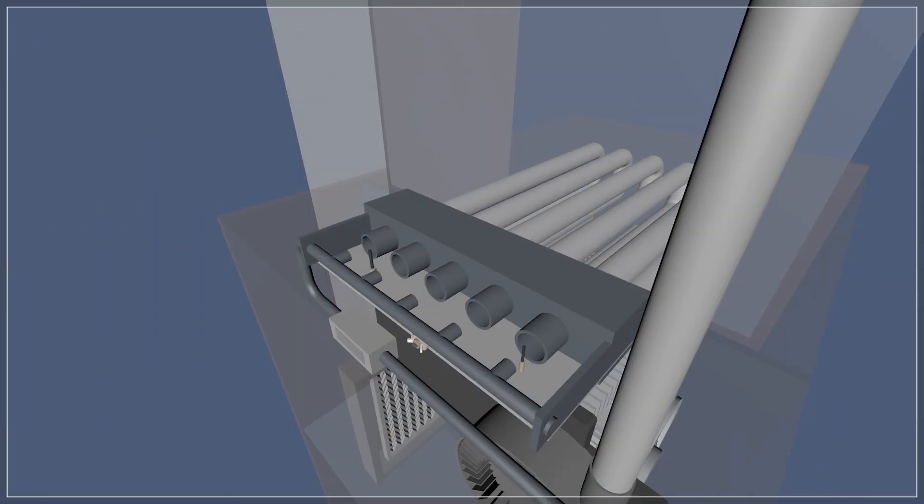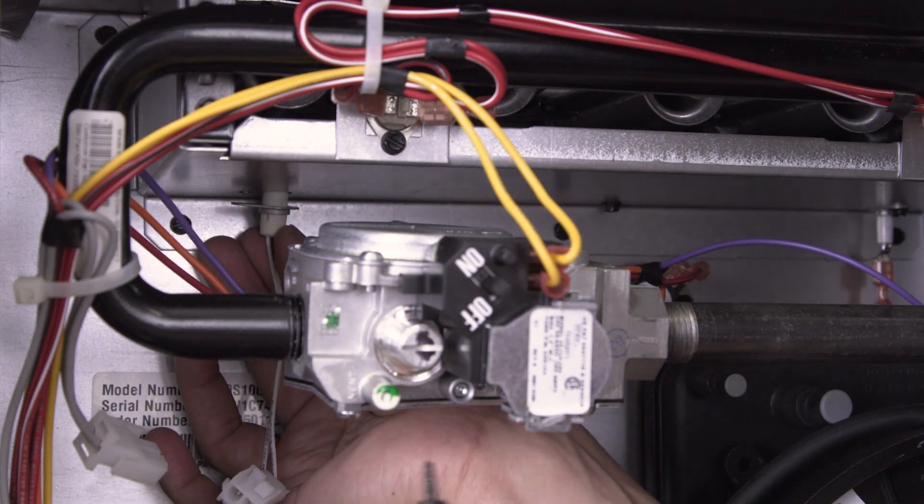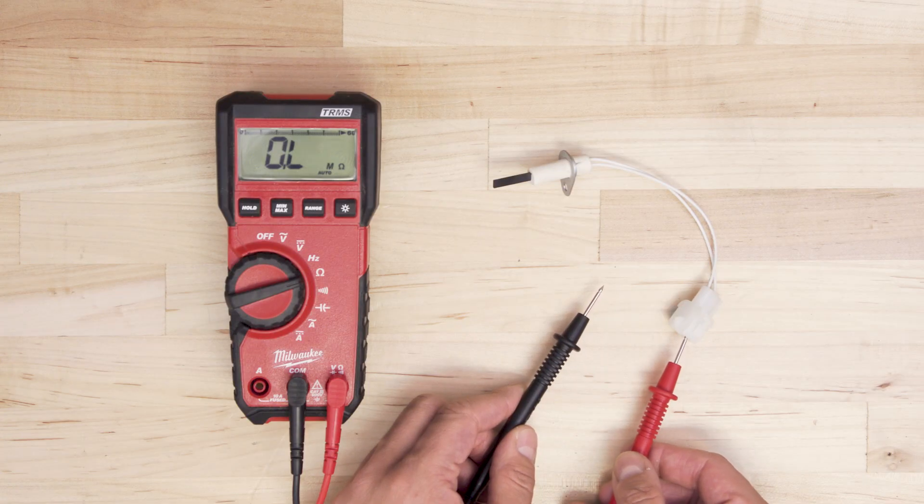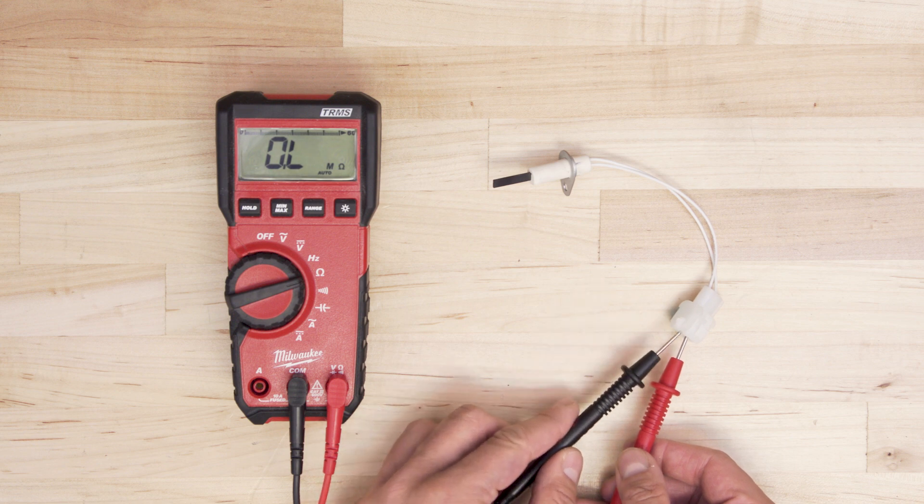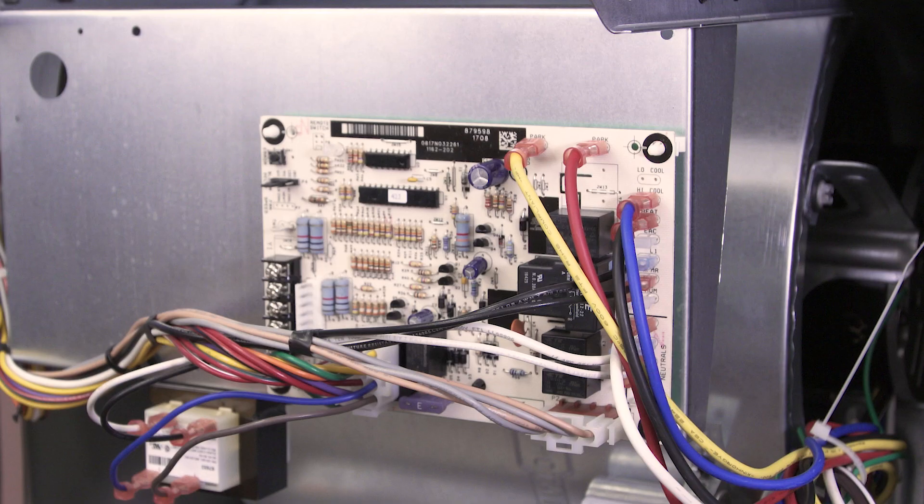If the pressure is good, then voltage is sent to the hot surface igniter. Some furnaces might use a spark igniter instead. If the igniter doesn't activate, then remove the igniter and test for continuity. If the igniter doesn't have continuity, it will need to be replaced. If the igniter has continuity but still doesn't ignite, then it might be a problem with the wires or the control board.